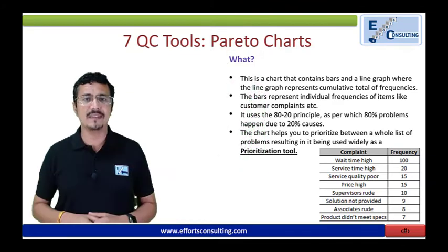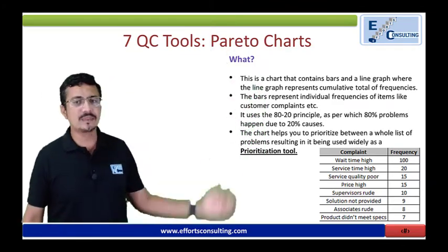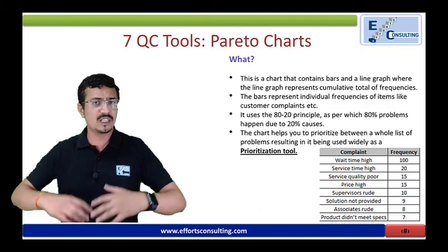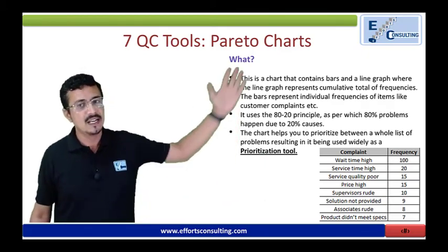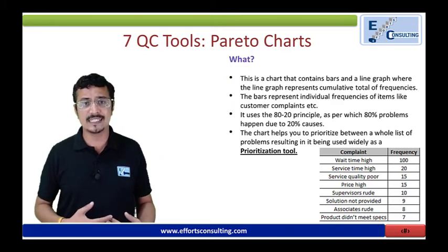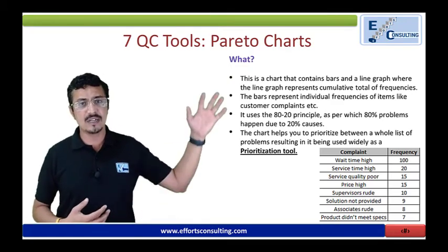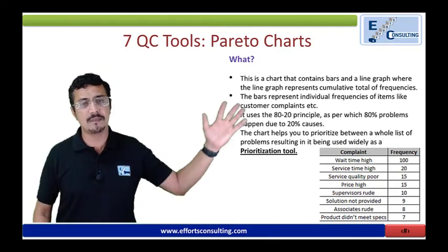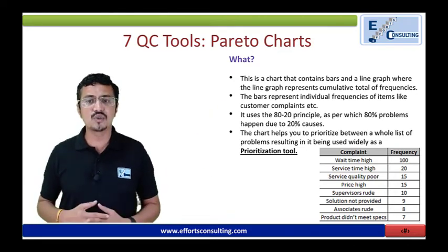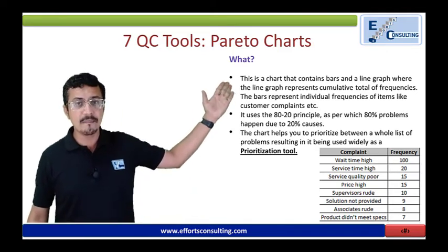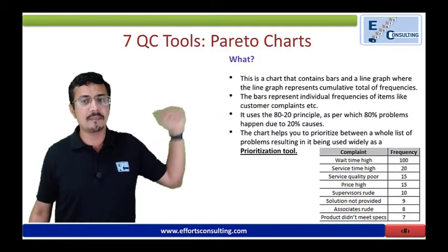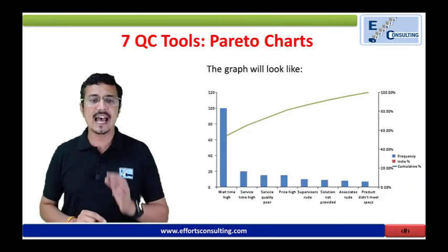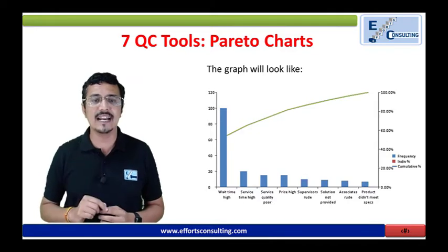In this table we have data of complaints versus frequency for a call center or service department. Waiting time was cited by 100 people as being too high. Service time high was noted by 20 percent of people. Service quality poor was cited by 15 people, price high by 15 people, supervisors rude by 10 people, solution not provided by 9 people, associates rude by 8 people, and product did not meet specifications by 7 people. This clearly shows that waiting time is on the higher side.